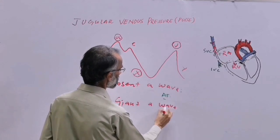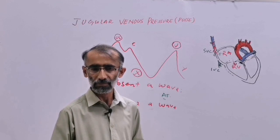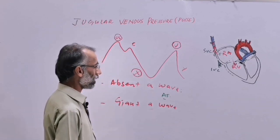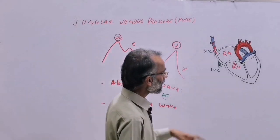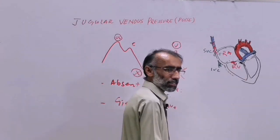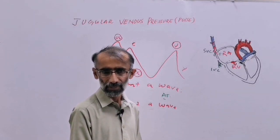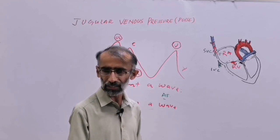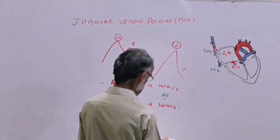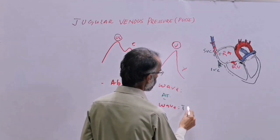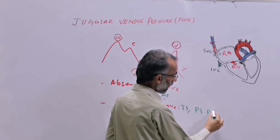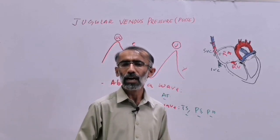Giant A wave: a larger than normal A wave. If there is any blockage in the outflow tract — such as tricuspid stenosis — the right atrium needs more pressure to overcome the stenosis, forming a giant A wave. Common causes of giant A wave include tricuspid stenosis, pulmonary stenosis, and pulmonary hypertension.